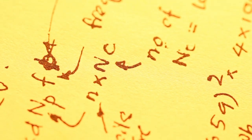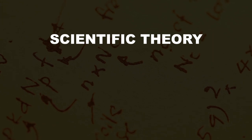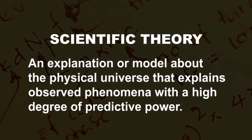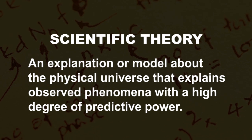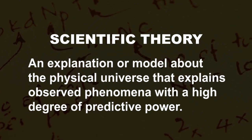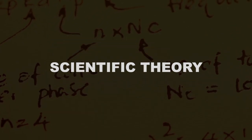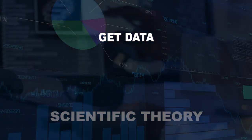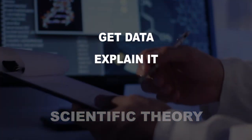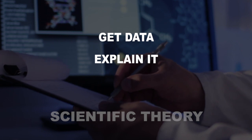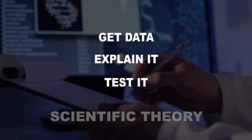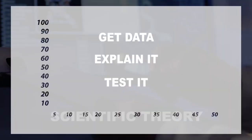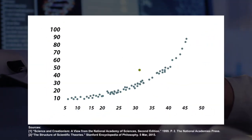Put simply, a scientific theory is an explanation or model about the physical universe that explains observed phenomena with a high degree of predictive power. In other words, it takes data we've accumulated and seeks to find the best explanation for it — an explanation that has to be tested rigorously, explains as much of the data as possible with the fewest holes, and is useful in making accurate predictions.